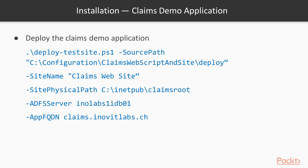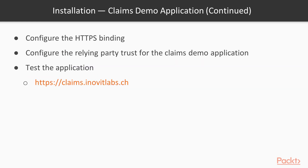Now that we have prepared our basic ADFS and web application proxy infrastructure, we will deploy the claims demo application with the deploy-test-site.ps1 script from the course code package. The application allows us to view the claims-related information on our web page and helps us to get a better understanding of the topic. After the base installation we will install and bind the same certificate we already used for ADFS and the web application proxy to our claims demo app in the IIS manager. Next we will configure our first relying party trust in ADFS to use our claims demo app, then test it with the provided links.